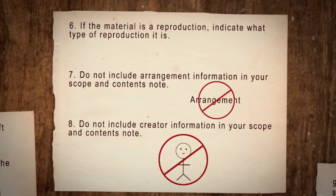If the material is a reproduction, indicate what type of reproduction it is. Do not include arrangement information in your scope and contents note. Do not include creator information in your scope and contents note.